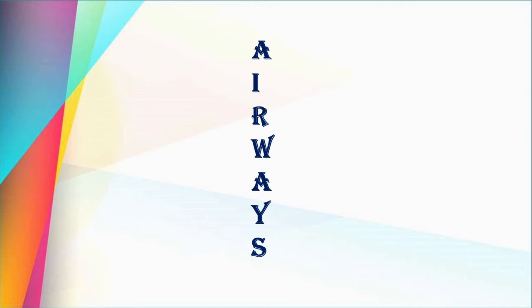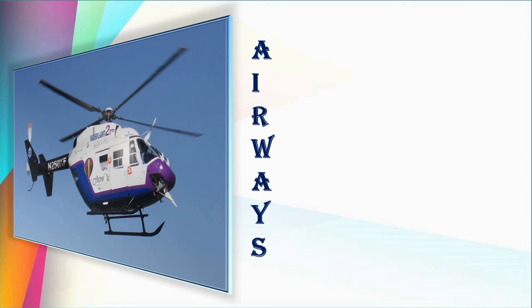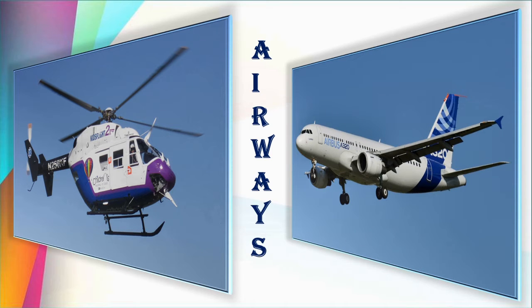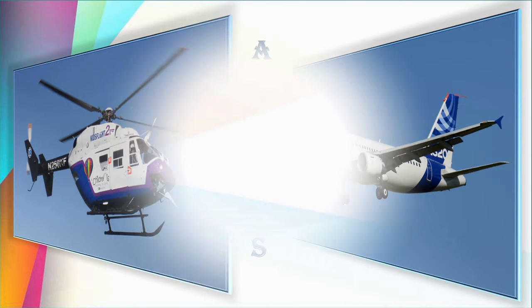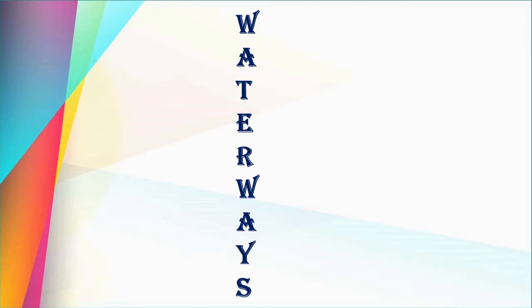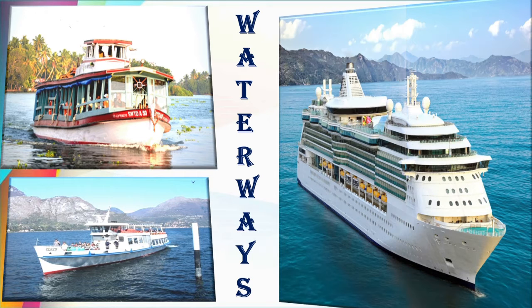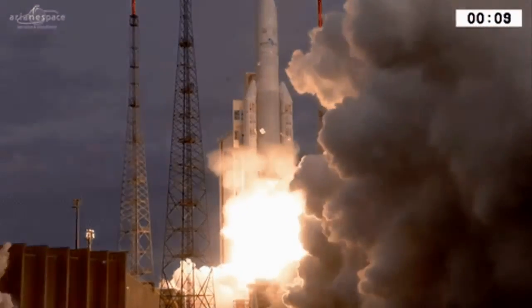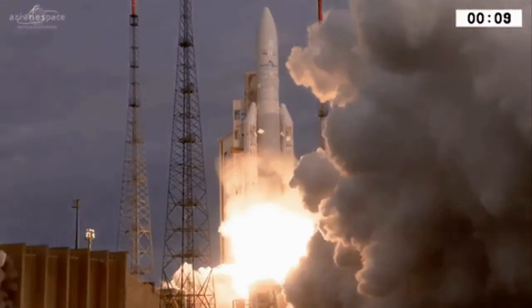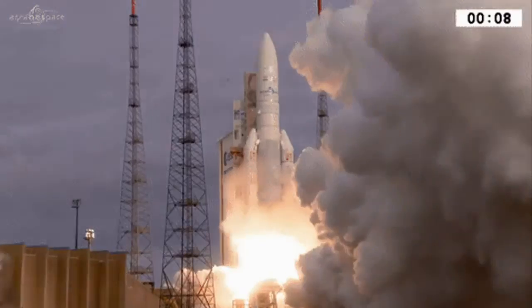Airways means vehicles that move in the air — for example, helicopters and planes. They move in the air and don't need any roads. Waterways vehicles need water to move from one place to another — small boats, big boats, and ships. And a rocket moves in space, away from the earth.